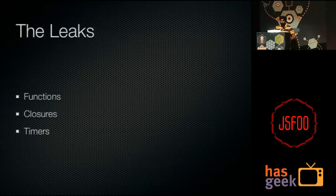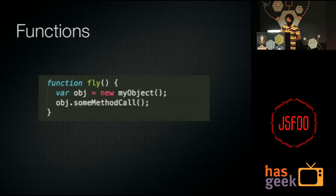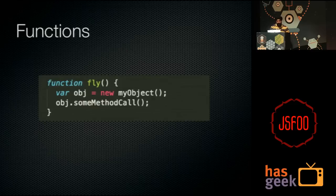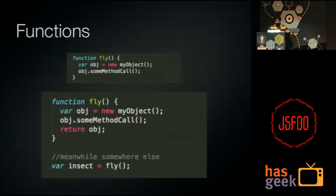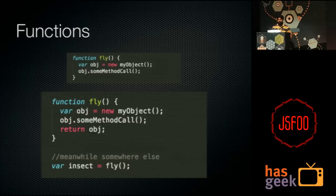Here is a function called fly which creates a new object of type MyObject and makes a method call. In general, whenever this fly method executes and ends, it will garbage collect the object obj because it is no longer being referenced. Contrast that with a minor modification where we return the object obj and assign fly to insect — insect is now holding the reference to obj. So even if the function execution ends, this will definitely cause a memory leak. We should either avoid such things or ensure objects are dereferenced when we don't need them.